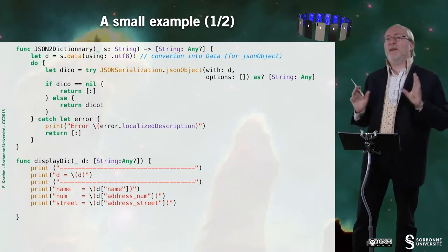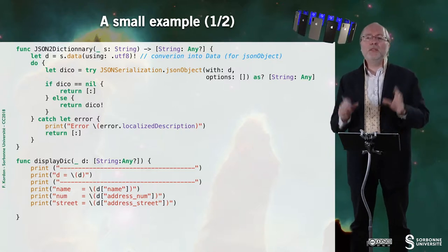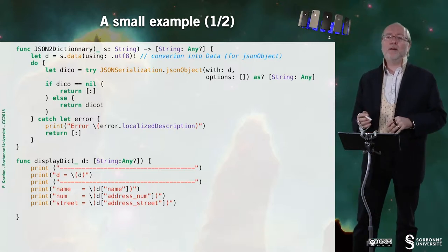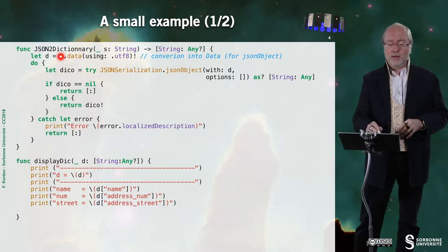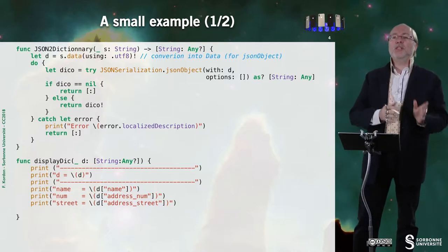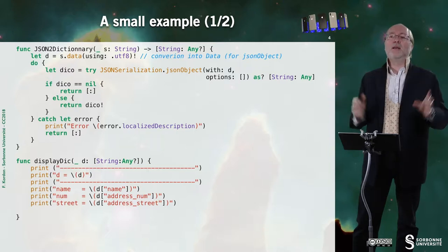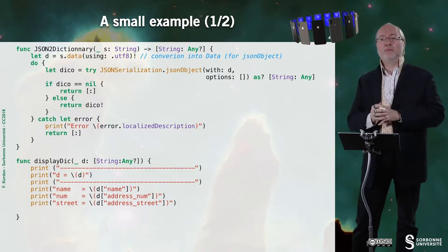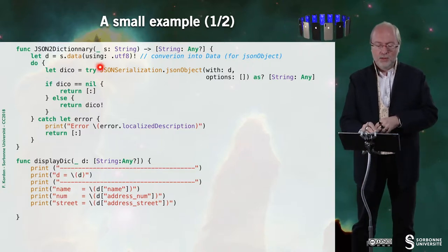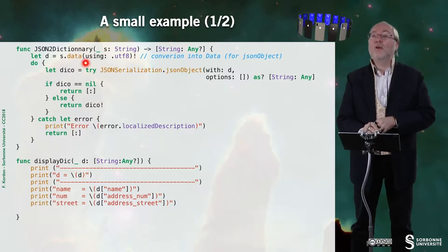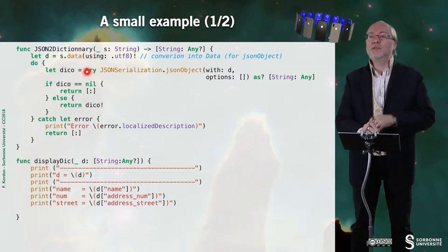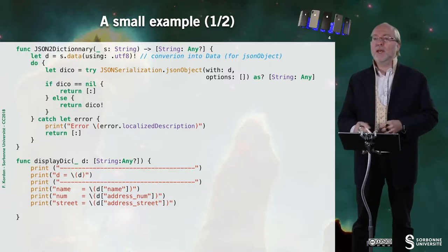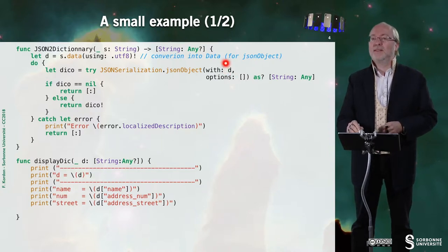Let's have a small example — a very small example that was more or less running in the Swift playground. Here I have my method that does JSON to dictionary. So I have a sort of JSON file, and I want to transform it into a dictionary that is a key-value couple. So here I'm using JSONSerialization JSON object. Of course, I put it into a try because it has an exception, and it is protected by a do-catch. And here I use this data.